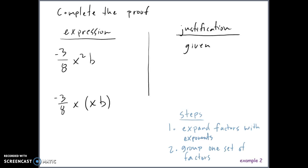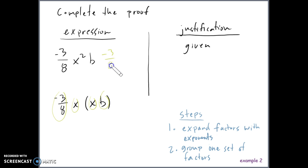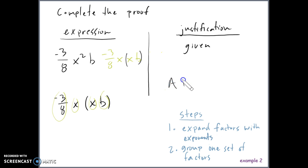Here we have a proof to complete. The first thing to do is expand factors with exponents — this makes it easy to see what's going on. We've got four things being multiplied even though it looks like three. They expanded it as negative three over eight times x times x times b — two x's because it's squared. The order has not changed, but the way the factors are grouped has: they're now grouping x and b together, which is the associative property of multiplication.